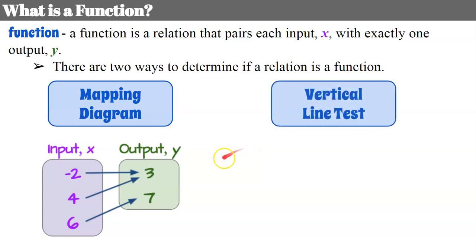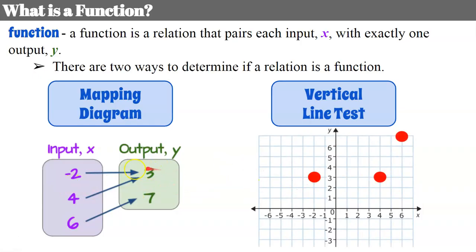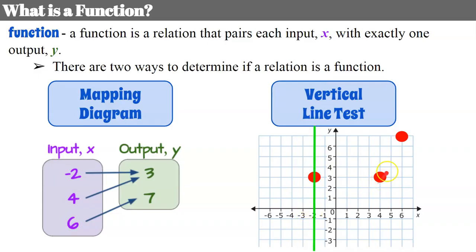We could also use the vertical line test. If we graph our ordered pairs — negative 2, 3; 4, 3; and 6, 7 — and if we can draw a vertical line through every point on the graph and it only passes through one point of the function, it passes. Vertical line through one point, vertical line through one point, vertical line through one point. So I have a vertical line through each of the points, and it only passes through one point. It passes the vertical line test, so it's a function. This is the same relation, and we've used two different methods to determine that it is a function.